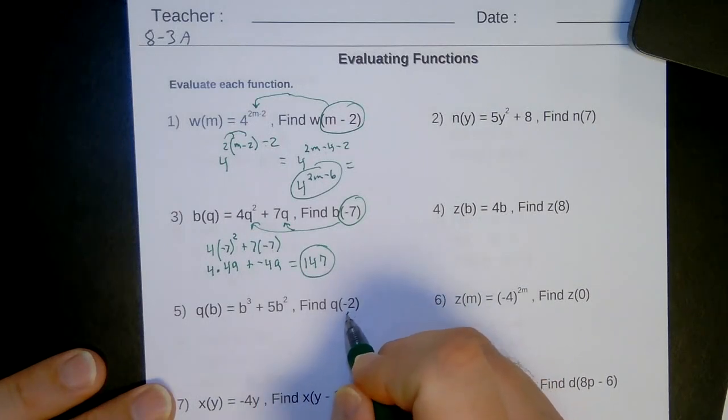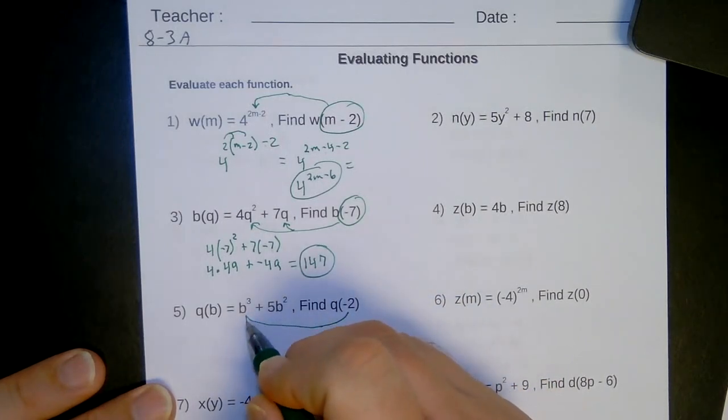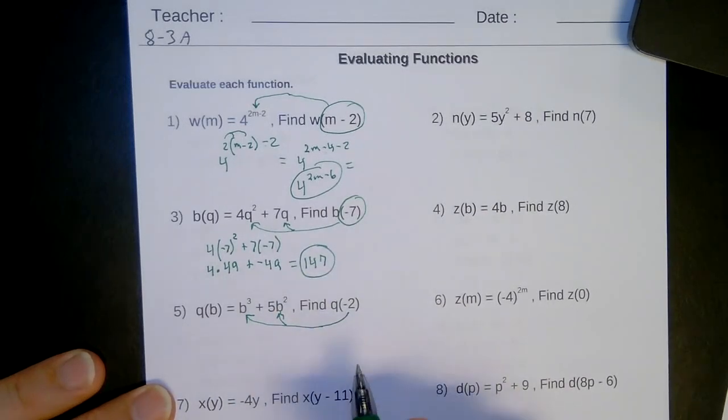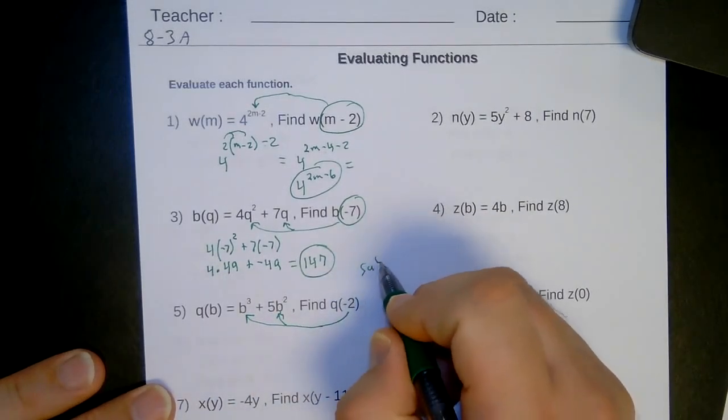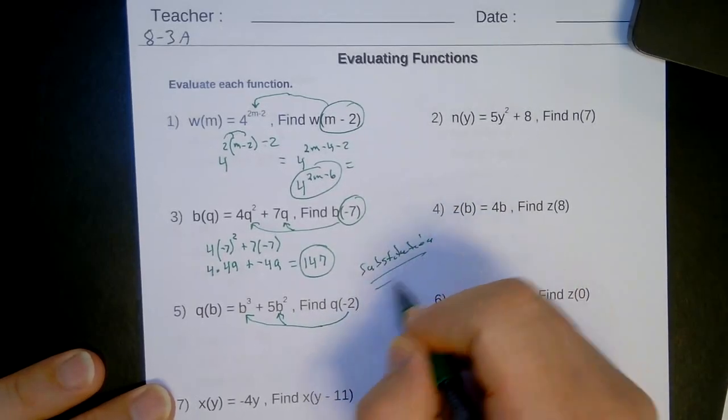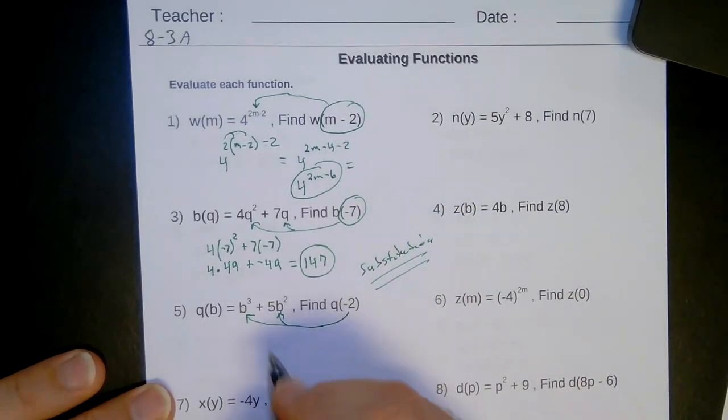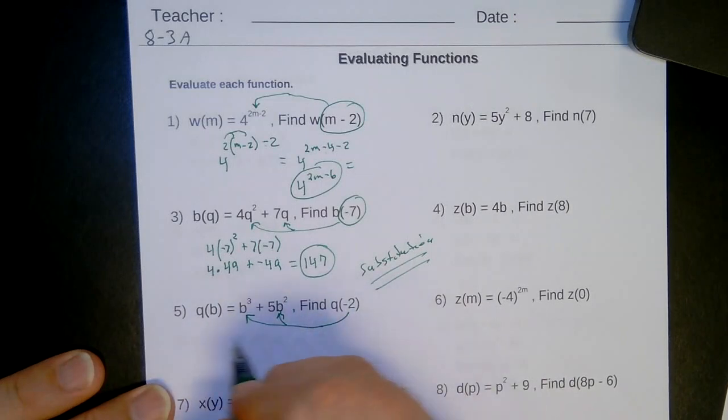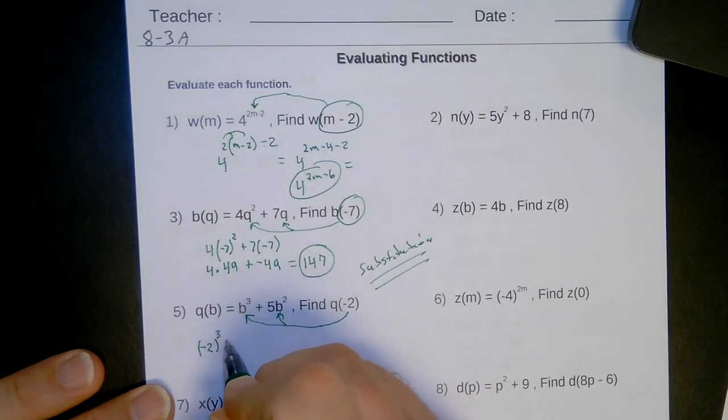Number 5. Negative 2. I'm substituting in to that spot and that spot. Again, it's just substitution. So we have negative 2 to the third power plus 5, parentheses, negative 2 squared.